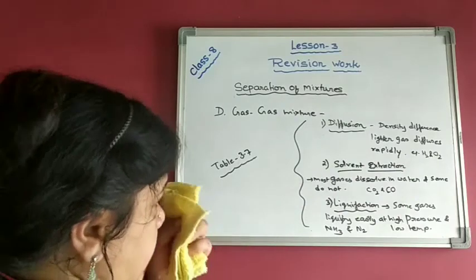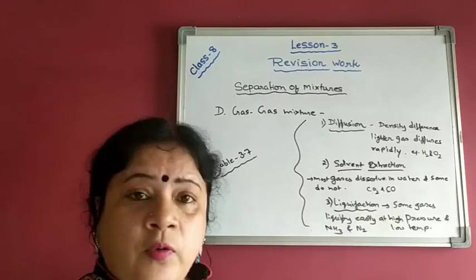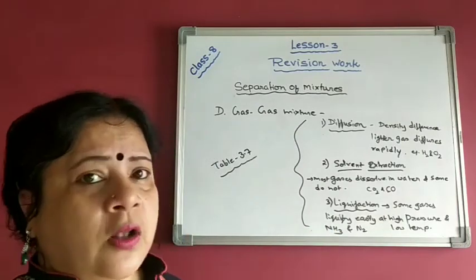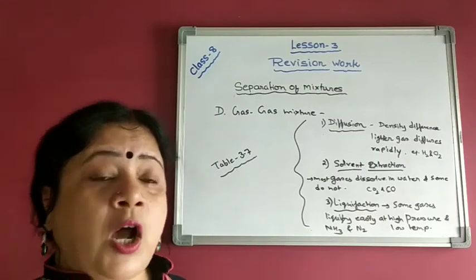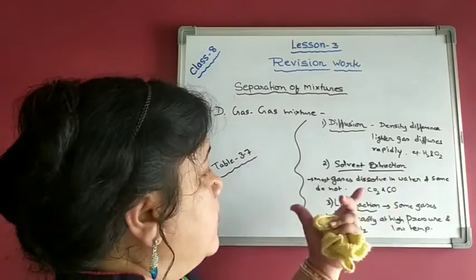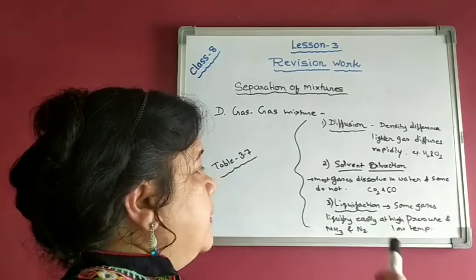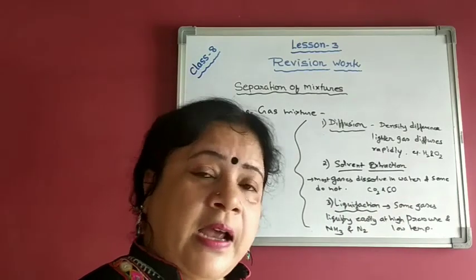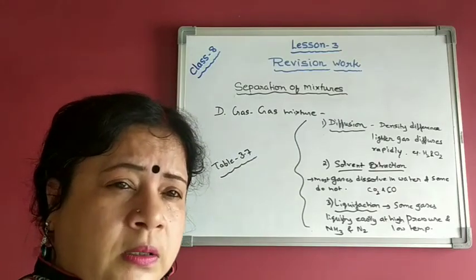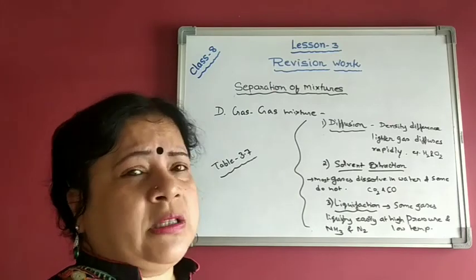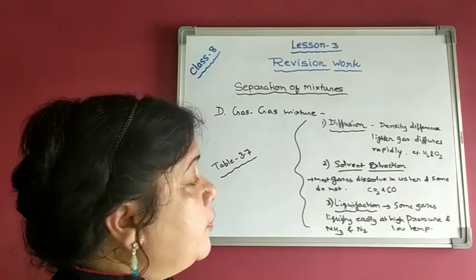The second process for gas-gas separation is solvent extraction. Most gases dissolve in water, but some do not. Using high pressure, we can easily separate them. For example, carbon dioxide is highly soluble in water, whereas carbon monoxide is almost insoluble. So carbon dioxide and carbon monoxide can be easily separated by the process of solvent extraction.